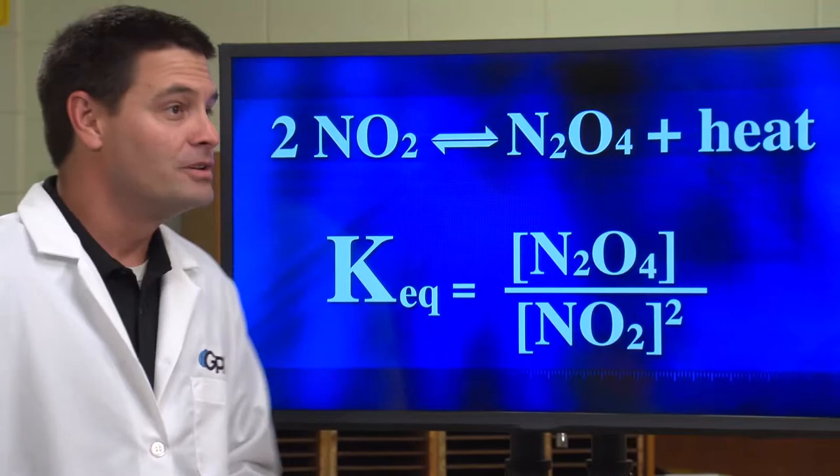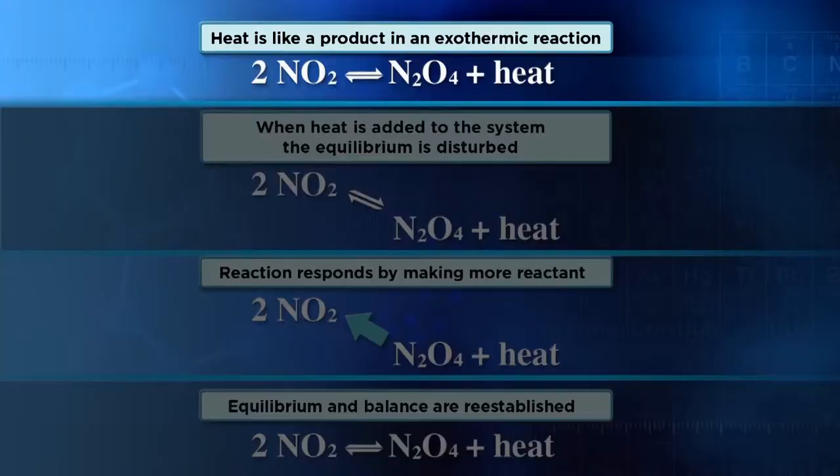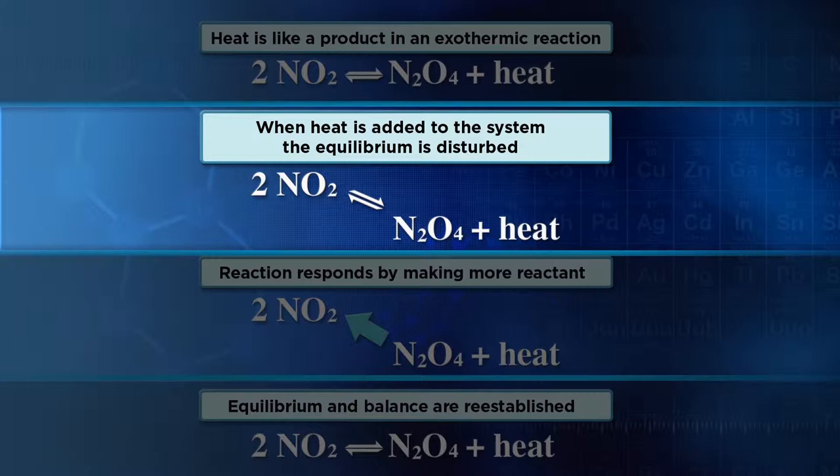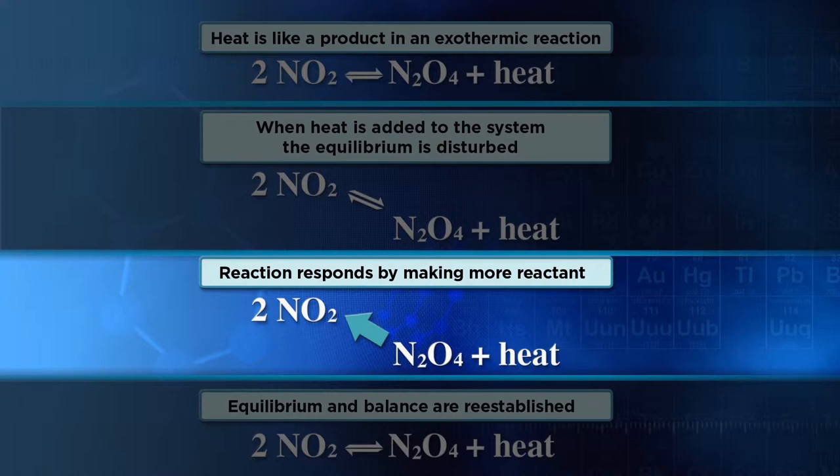So our reaction is exothermic, so we can think of heat or energy added as being a product. And so when we increase the temperature, the equilibrium is going to be disturbed. And Le Chatelier's principle predicts that the reaction is going to shift away from the disturbance, and in this case, it's going to make more reactant until the equilibrium can become reestablished.